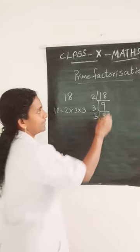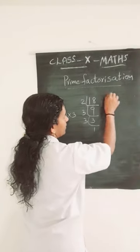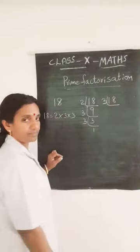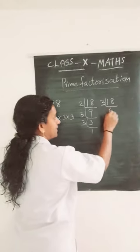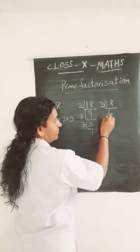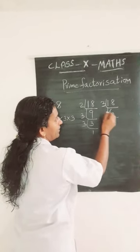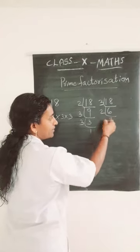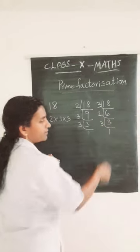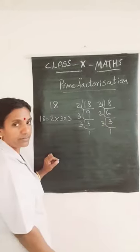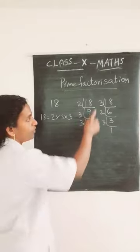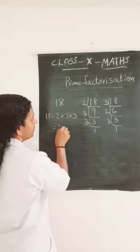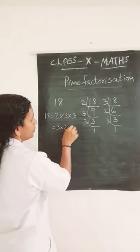Again, if you are doing this work by starting with 3, what you are getting? 6. Again, you can divide by 2, you are getting 3. Again with 3, you are getting the number 1. So what is the answer you got? Now it is 3 into 2 into 3.